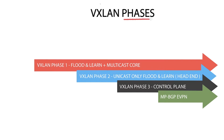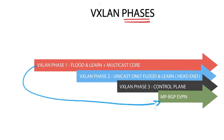VXLAN went through a number of phases for ways to get the remote VTAP IP information. Initially it started with a flood and learn process and finally moved to use a proper control plane, EVPN. EVPN is a pretty good control plane, as previous methods relied on data plane flood and learn behaviour, hindering the scalability of VXLAN domains.